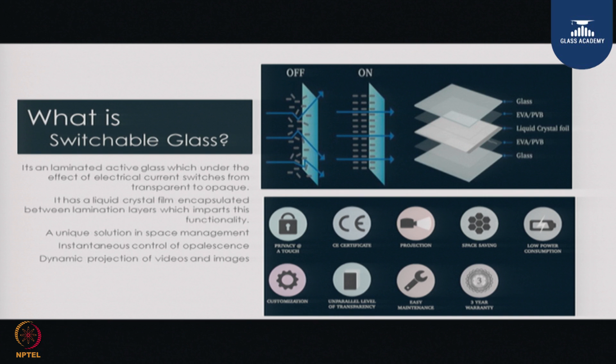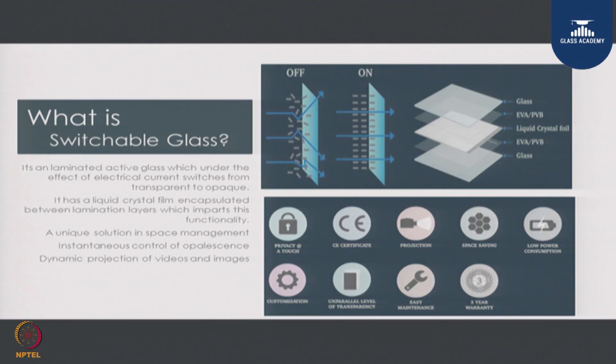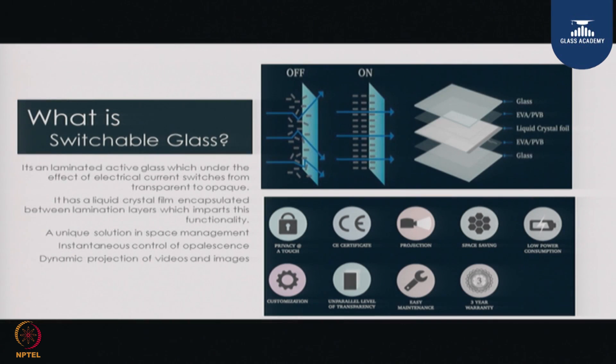As a product, it can offer privacy with the touch of a button. This switchable technology is different from the electrochromic facades discussed earlier, where tinting happens over elapsed time. Here, by a push of a button you can make the glass opaque or transparent. Additionally, a back projection can be done on the glass, making it like a billboard when used in facades.